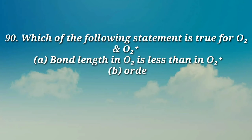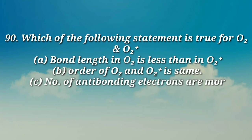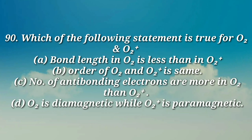(a) Bond length in O2 is less than in O2+, (b) order of O2 and O2+ is same, (c) number of antibonding electrons are more in O2 than O2+, (d) O2 is diamagnetic while O2+ is paramagnetic.